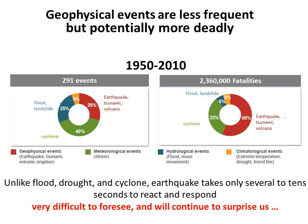If you pull together events over the past 60 years, over 50% of people died due to earthquake, tsunami, and volcano, whereas their event percentage is actually smaller than cyclone — 29% geophysical hazard versus 40% cyclone. So what this says is that geophysical events are less frequent, but potentially more deadly.